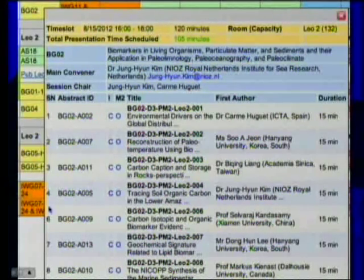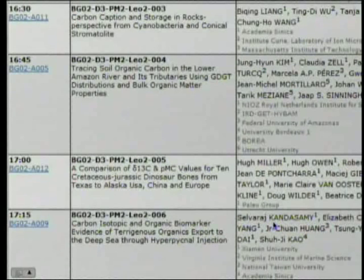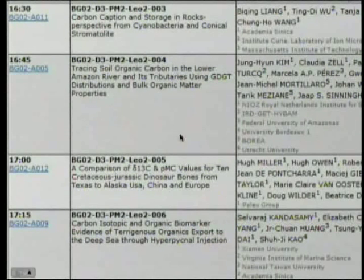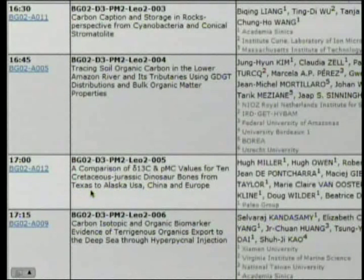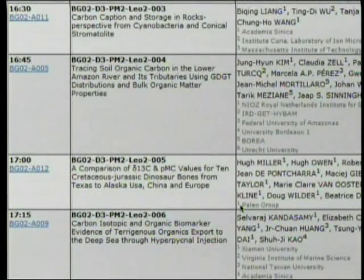Maybe if we look at the schedule before the meeting, we can find out — and it's the same four and six we had before. So we'll go to a screenshot captured before the meeting. Now we have O3, O4 — Tracing Soil Organic Carbon, Jung-Yun Kim — and now we have an O5: 'A Comparison of Delta-13C and PMC values for 10 Cretaceous-Jurassic dinosaur bones from Texas to Alaska, USA, China, and Europe,' by Hugh Miller and Hugh Owen.